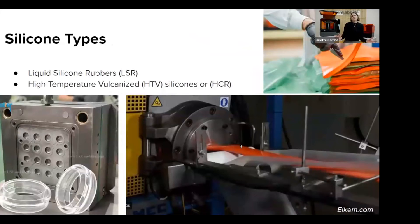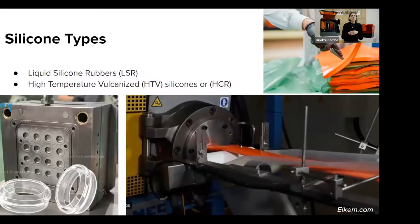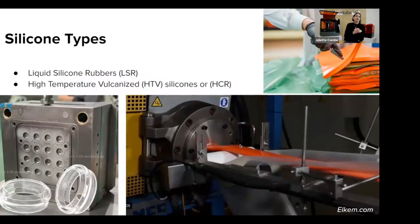Silicone elastomers dominate the market, and they can be divided into three categories. First, liquid silicone rubbers, also called LSR. Those are high performance silicones, usually employed for producing technical parts with very tight tolerances. They are processed at high temperature with liquid injection molding, and are usually selected for large volume production.